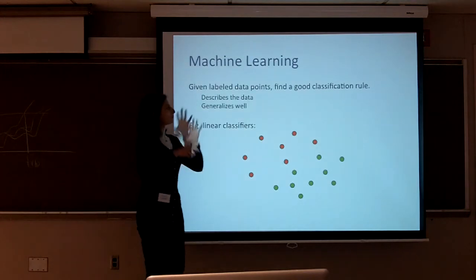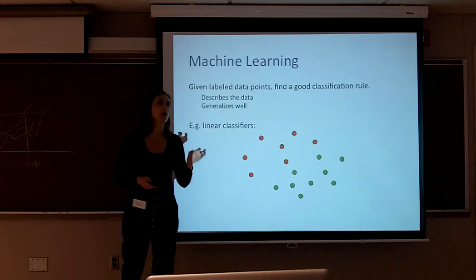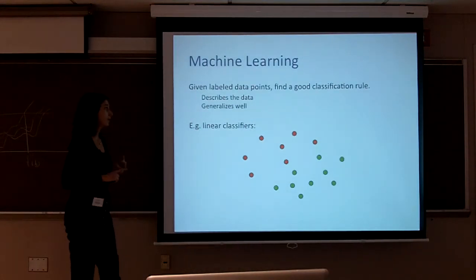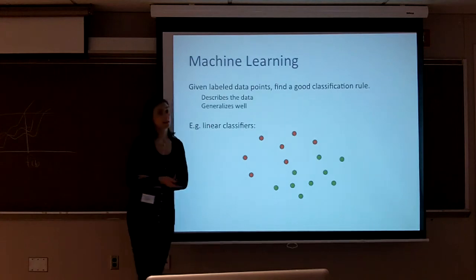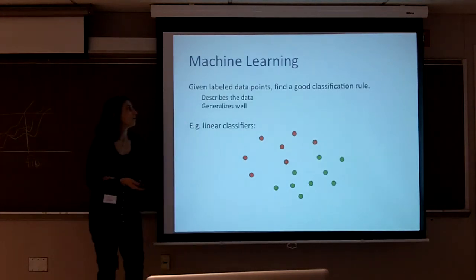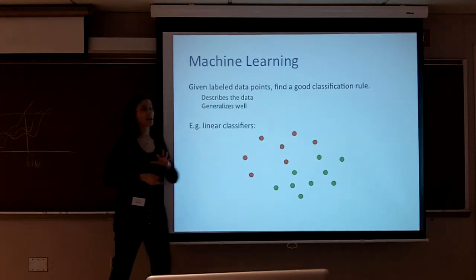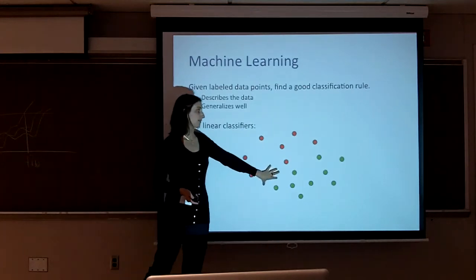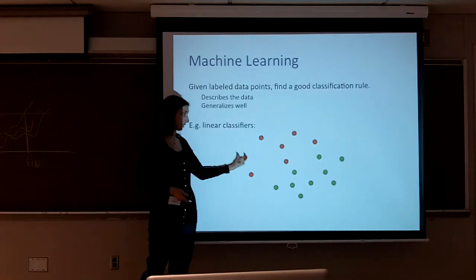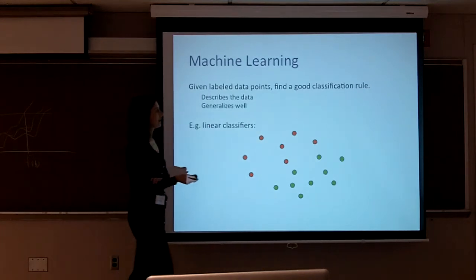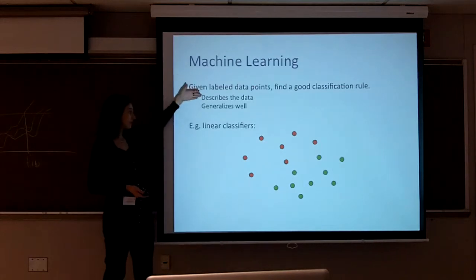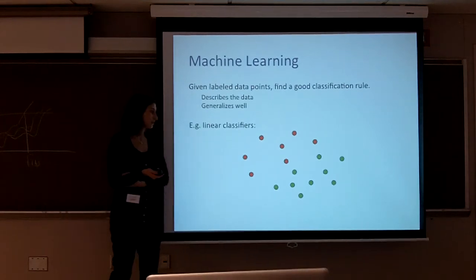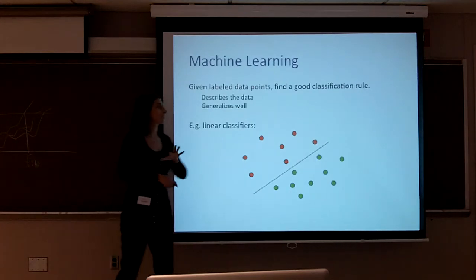Machine learning is actually an umbrella term for many algorithms and techniques coming out of computer science departments, statistics departments, even some in applied math and finance. Some of these techniques are also considered data mining. In standard batch supervised machine learning, you get a batch of labeled points ahead of time and want to find a good classification rule that describes your previous data well and generalizes to future unseen data. So for example, if you were trying to fit linear classifiers, you might fit one like this.